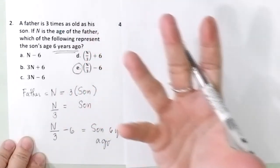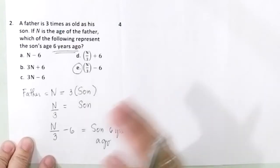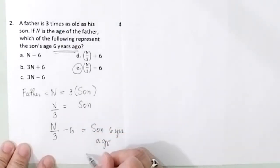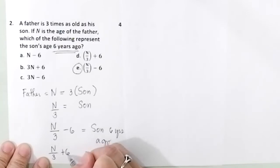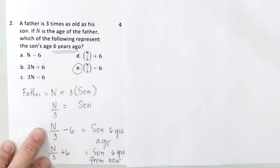What if the problem will ask for the age of the son 6 years from now? What you will do is N over 3, this is the age of the son now, plus 6. That will be the age of the son 6 years from now. If it is 10 years ago, N over 3 minus 10. 10 years from now, N over 3 plus 10.